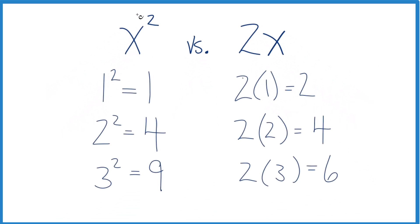So if we put 1 in for x here, 1 squared is 1. Put 2 in for x, we get 2 squared, that's 4. 3 squared, that's 9.